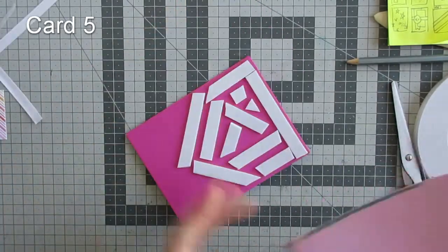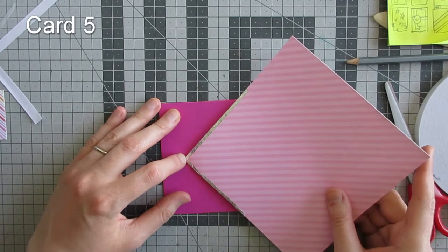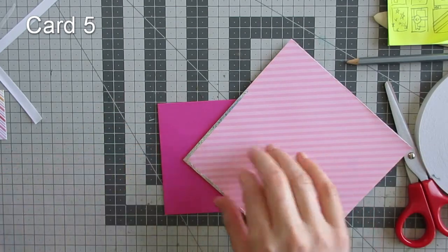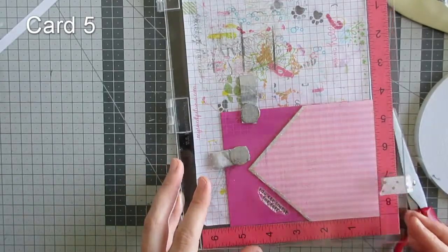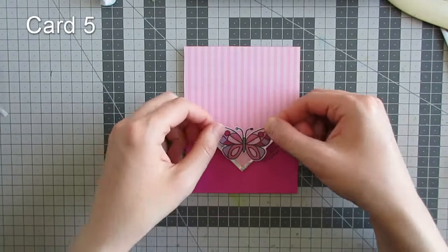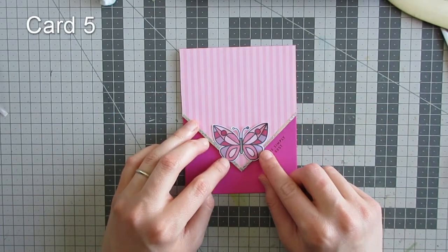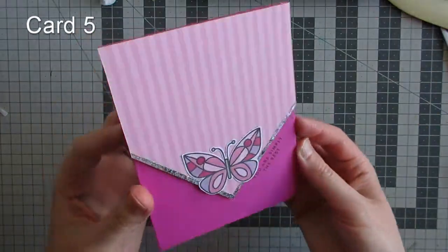I added foam tape to my doll pink card base, adhered the patterned paper panel with the foiled edge to the bottom corner, cut away the overhanging pieces, stamped my sentiment, and then adhered a butterfly which I'd colored in shades of pink.